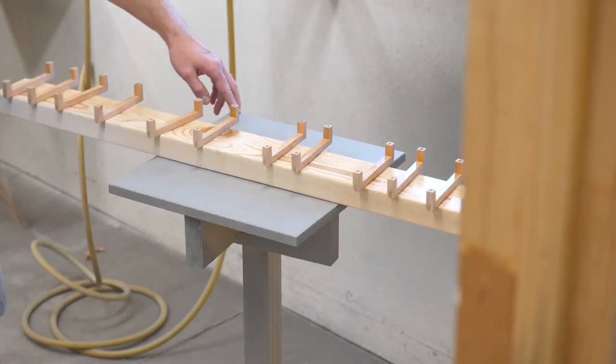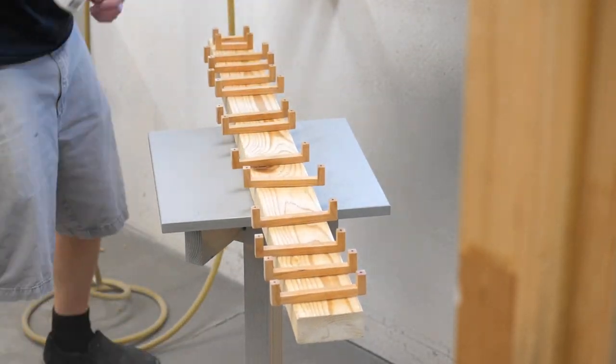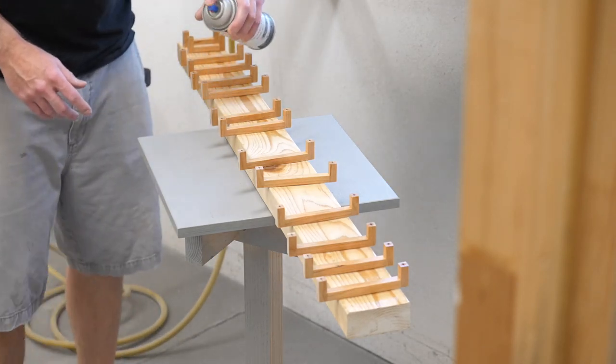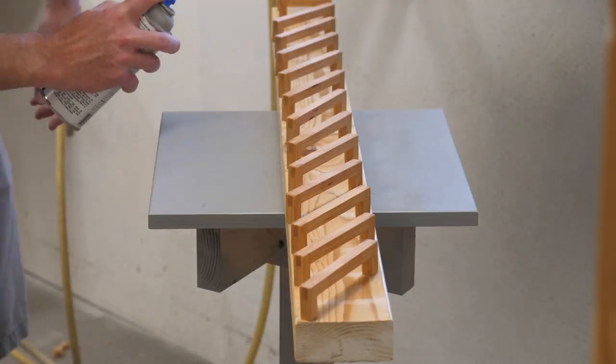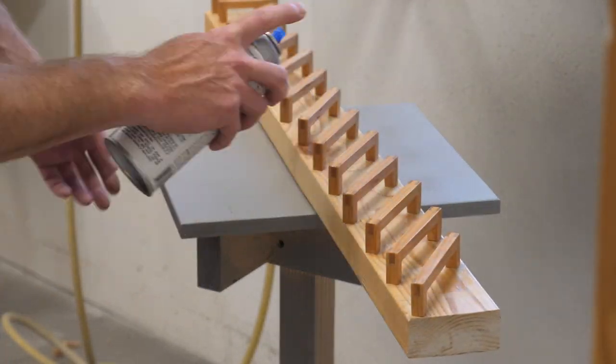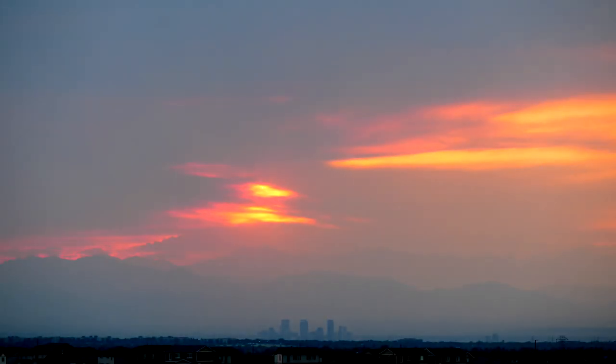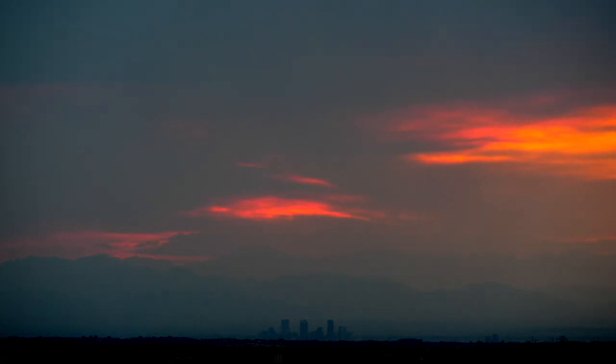Moving right along, it's now time for some finish. For smaller projects, there's nothing quicker and easier than rattle can lacquer. Quick story, when I first started my woodworking business, I didn't have enough money for a spray system, and I had just gotten a commission for a big China hutch, maybe 6 feet wide, 7 feet tall. I finished the entire project with like 40 rattle cans of lacquer, and you know what? It looked great when it was done.